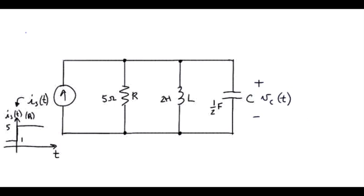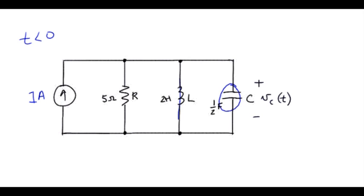Let's begin by finding the initial conditions. That's when the circuit is at t less than 0. The source is 1 amp. Inductor goes to a short, capacitor goes to an open circuit.